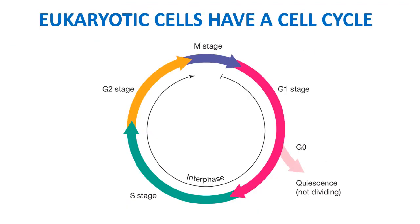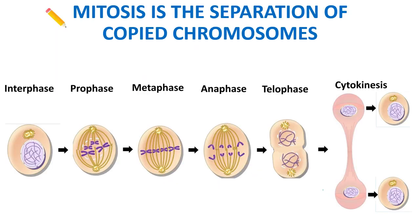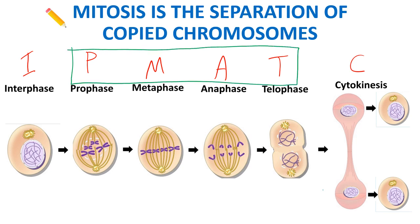Now we're into mitosis. A really useful acronym to remember the cell cycle is IPMAT — I, P, M, A, T — with cytokinesis at the end. IPMAT-C covers the whole cell cycle. Mitosis is only PMAT in the middle, because interphase is G1, S, and G2. Then we have mitosis, then cytokinesis at the end. There are four main phases in mitosis.